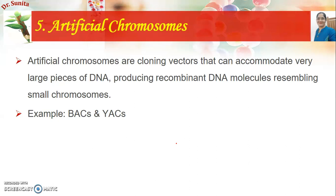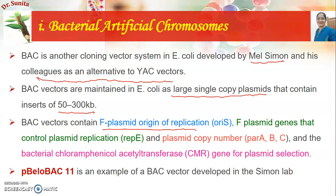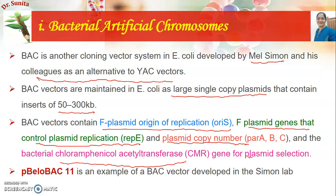First, we will discuss bacterial artificial chromosomes. BACs were developed by Mel Simon and his colleagues as an alternative to YAC vectors. BAC vectors are maintained in E. coli as large single-copy plasmids that can insert 50 to 300 kilobase pairs. BAC vectors contain an F plasmid origin of replication, F plasmid genes that control replication, partition genes par A, par B, and par C, and the chloramphenicol acetyltransferase gene for plasmid selection.